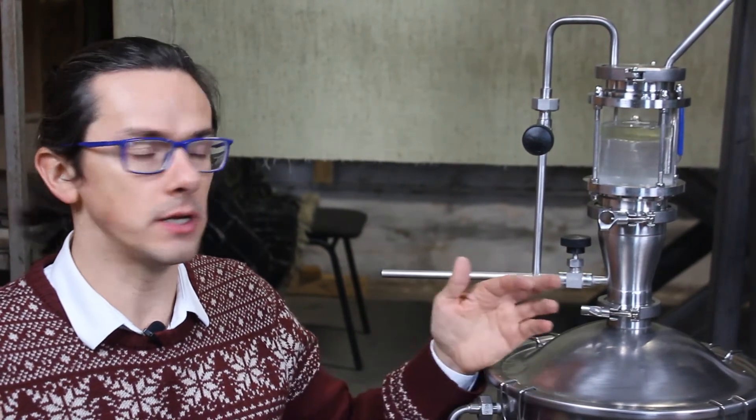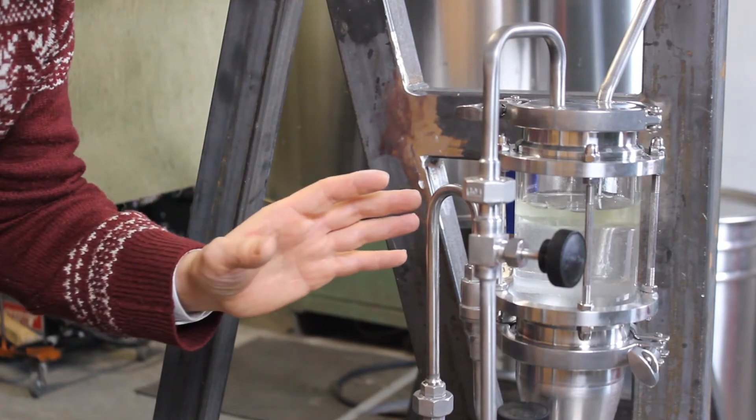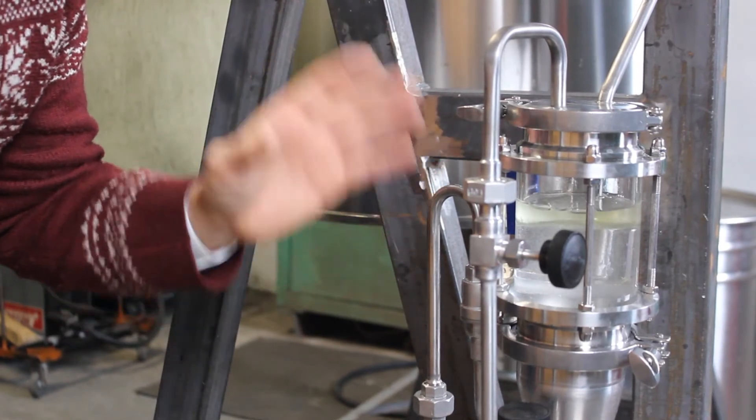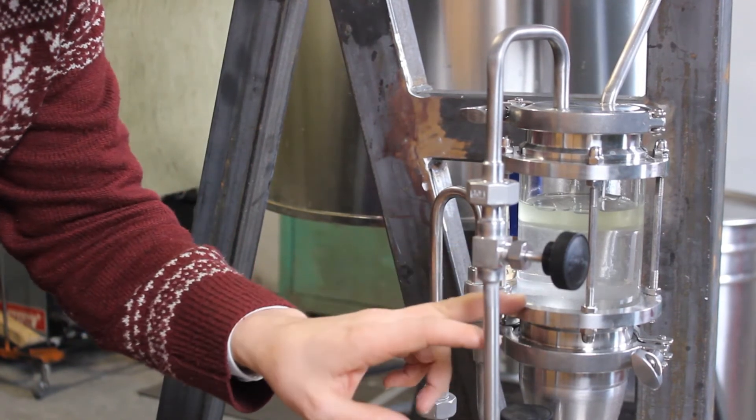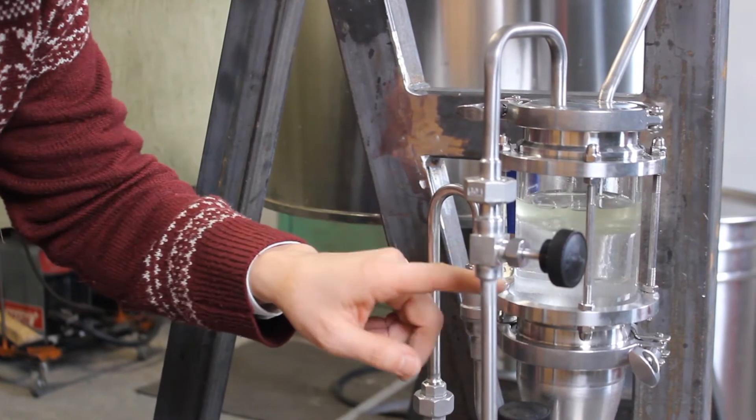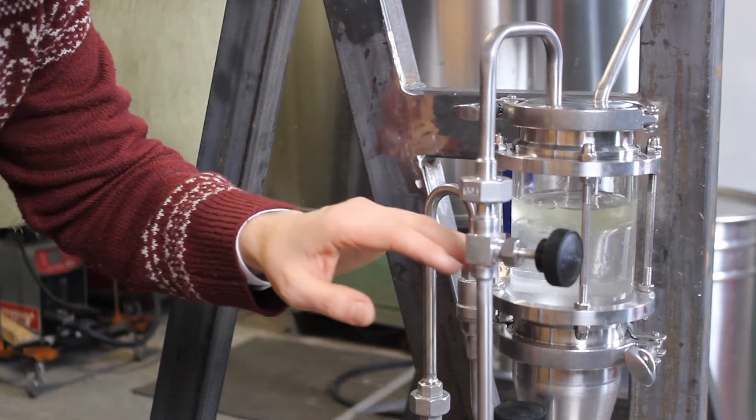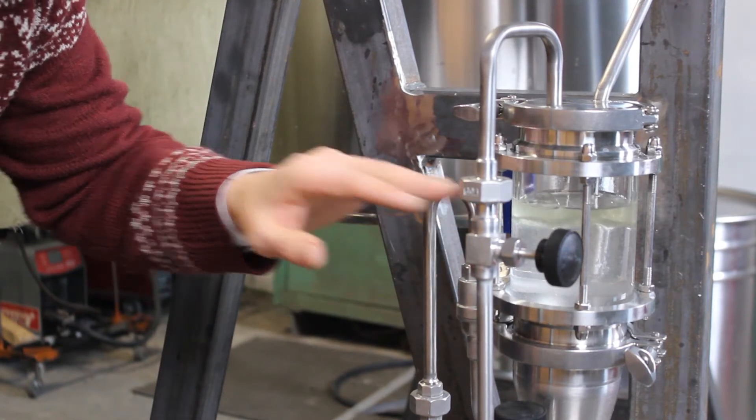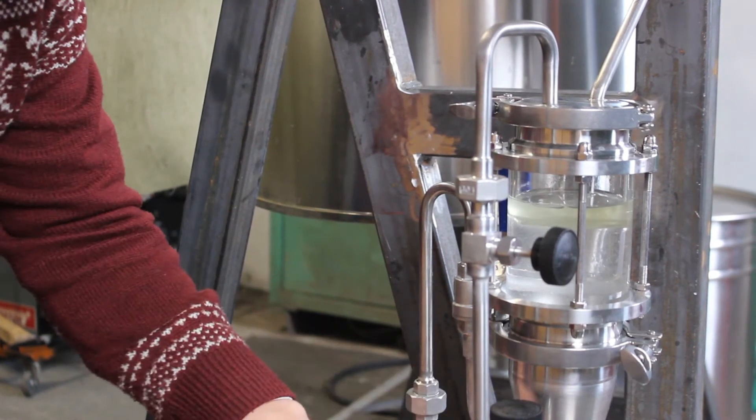And once the oil extraction will be finished, we will show how we get the essential oil out of the oil separator. This is our unique design of oil separator developed by CopperPro and we have here the main vessel of the oil separator. And through this tube, the hydrosol which is in the separator and which is exceeding the level goes into the vessel for collecting the hydrosol below the oil separator.